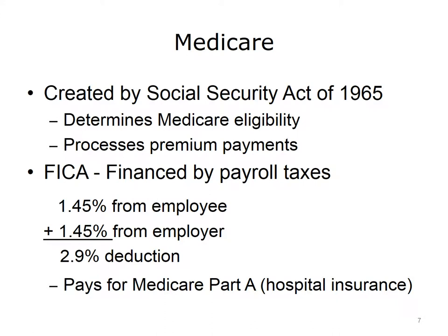Medicare was created by the Social Security Act of 1965 as an amendment to existing Social Security legislation. The Social Security Administration determines Medicare eligibility and processes premium payments. The Federal Insurance Contributions Act, or FICA, mandates the collection of payroll taxes to finance Medicare. If employed, the abbreviation FICA on a paycheck refers to this payroll tax deducted from employees' gross wages. Employees pay 1.45% of their gross pay into Medicare, matched by their employer for a total of 2.9%. This FICA payment funds Medicare Part A, which is the hospital insurance part of Medicare.